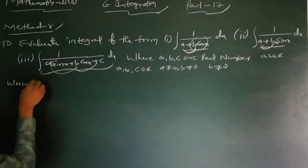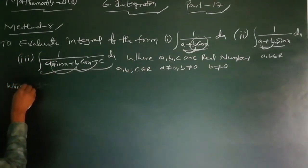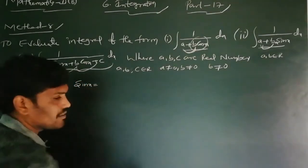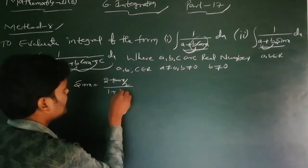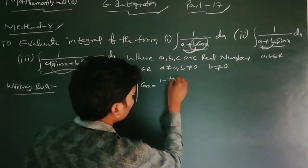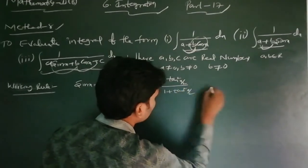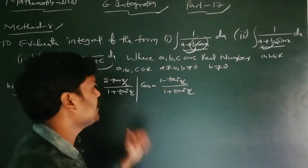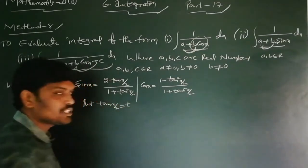What is the working rule? The working rule uses the fact that sin x and cos x can be written in terms of tan. Sin x in terms of tan is: 2 tan(x/2) / (1 + tan²(x/2)). Similarly, cos x in terms of tan is: (1 - tan²(x/2)) / (1 + tan²(x/2)). These are standard trigonometric formulas. After that, put t = tan(x/2).